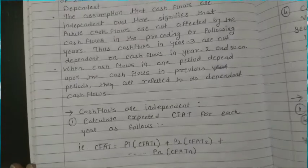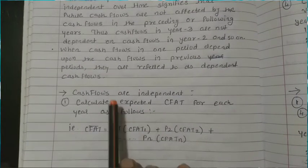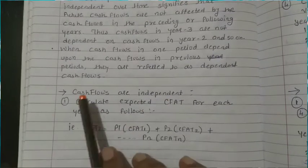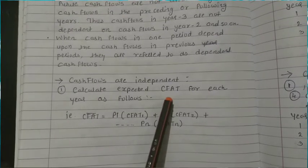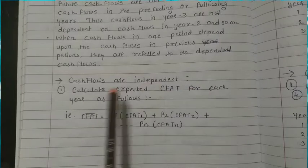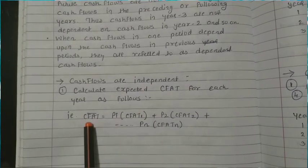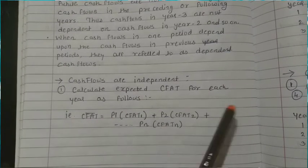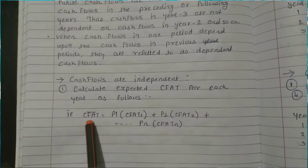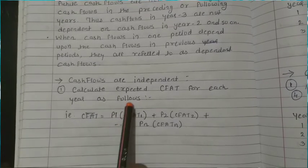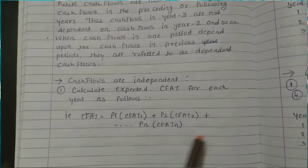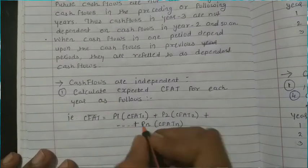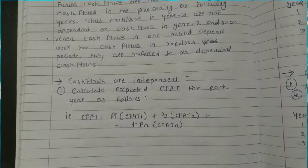Now, how to calculate NPV and standard deviation under this approach when the cash flows are independent. In the first step, we calculate the expected CFAT — that is Cash Flow After Tax — for each year. The formula for expected CFAT is: CFAT̄ = P1×CFAT1 + P2×CFAT2 + ... + Pn×CFATn, i.e., probability multiplied by cash flow.